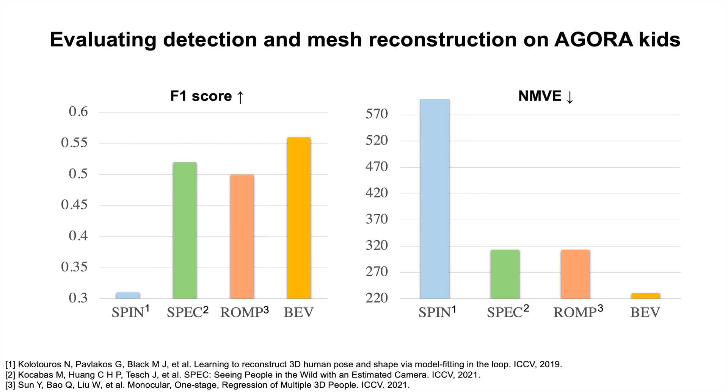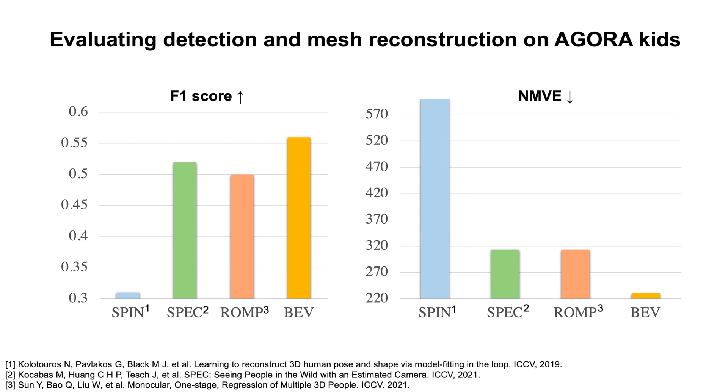On AGORA Kids, two charts present the F1 score and NMVE. All methods have been fine-tuned on AGORA or synthetic data generated in the same way as AGORA. BEV significantly outperforms these state-of-the-art methods in both detection and mesh reconstruction of children.